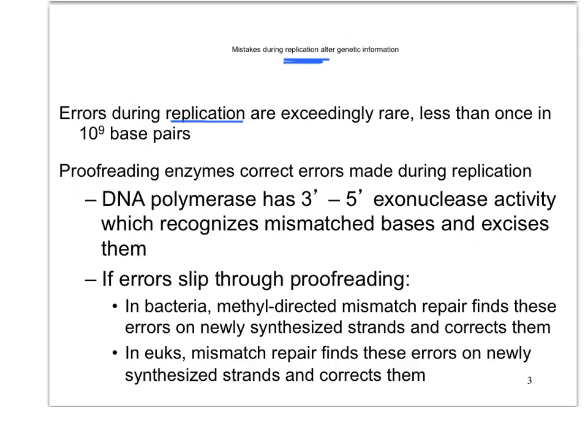We're going to talk about errors that occur during replication. And they are very rare, but they do occur. And so we have mechanisms to fix these. The first mechanism is called proofreading.